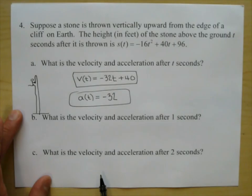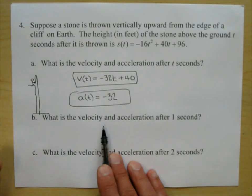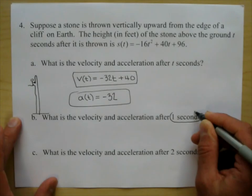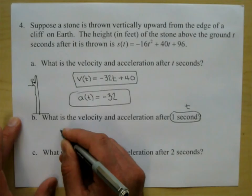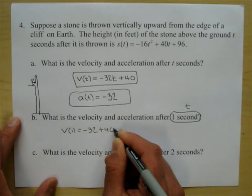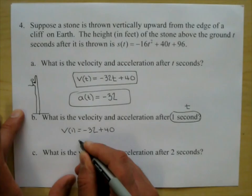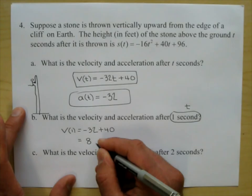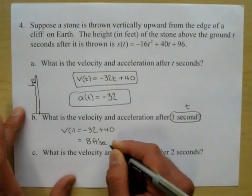Part b: what is the velocity and the acceleration after one second? We evaluate v of 1 equals negative 32 plus 40, which equals 8 feet per second. The velocity after one second is 8 feet per second.